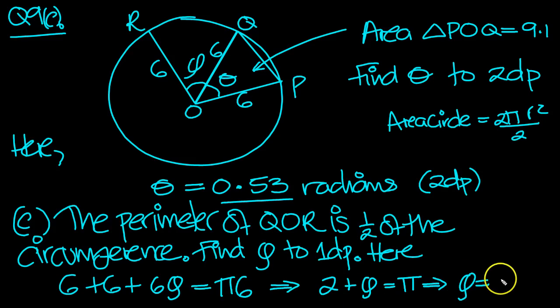which is 3.142 take away 2, which is 1.14 to 2 dp. And we can tap it in the calculator if we need to.